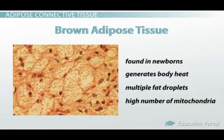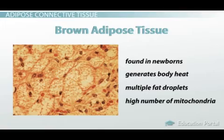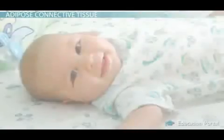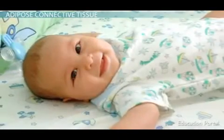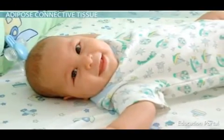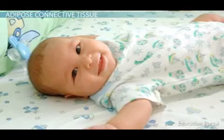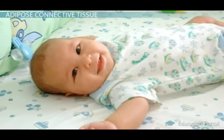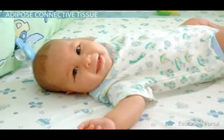As we grow, the mitochondria in our brown fat disappear, and this tissue behaves more like other tissues in our body. This is how we lose baby fat as we get older — we get rid of the brown adipose tissue.